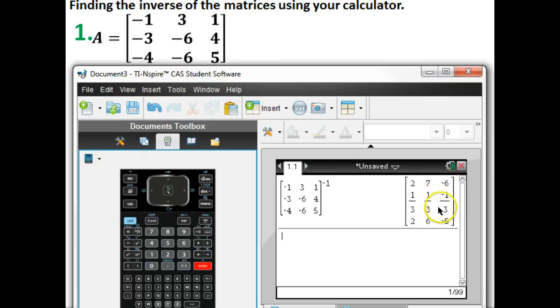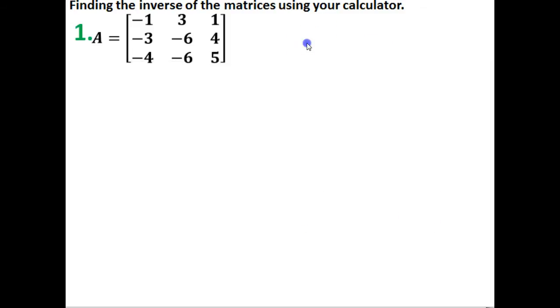2, 7, negative 6, 1 third, 1 third, negative 1 third, 2, 6, and 5. This middle section, that is a fraction right there. On the TI Inspire, it's kind of nice because it leaves it in fraction form. It doesn't convert it at all for you.